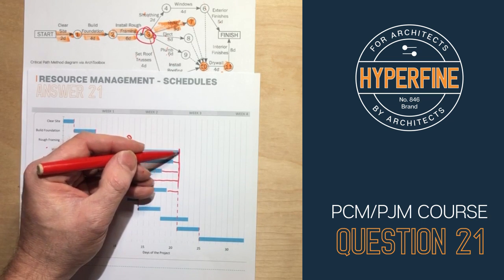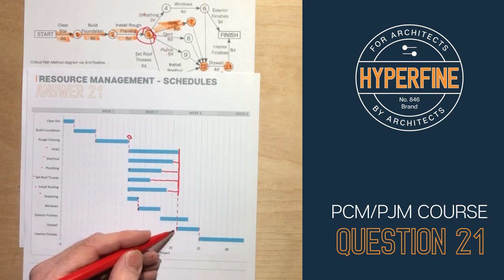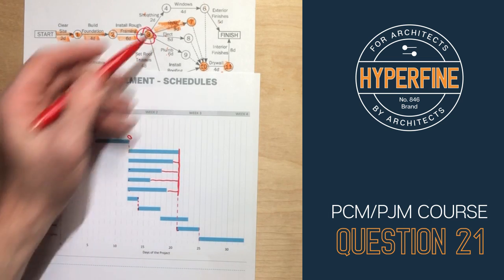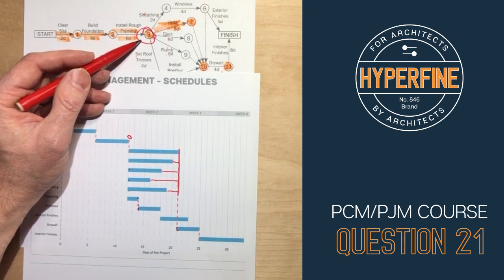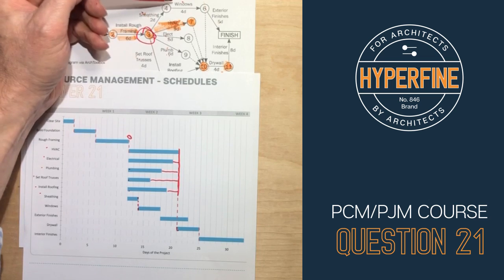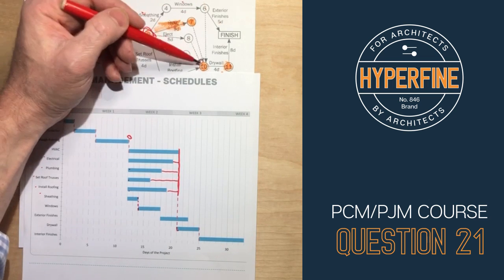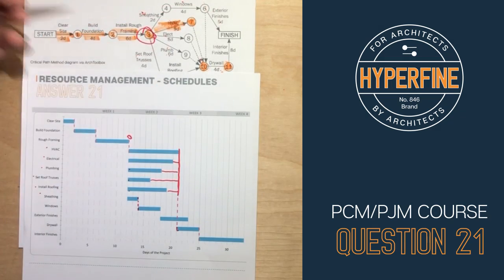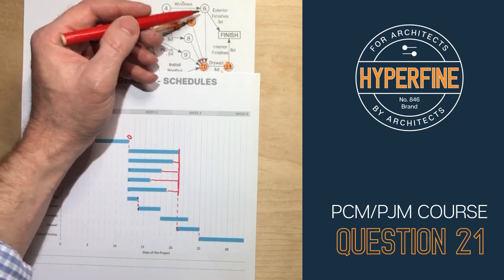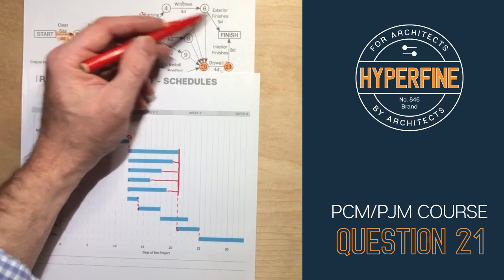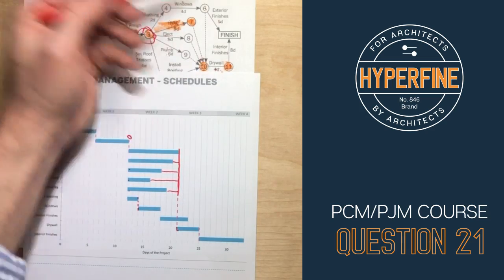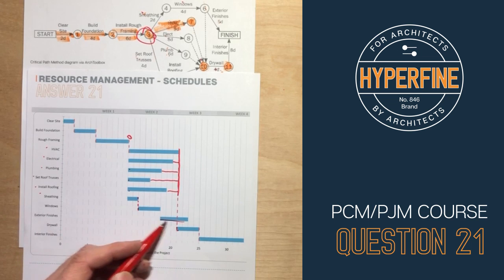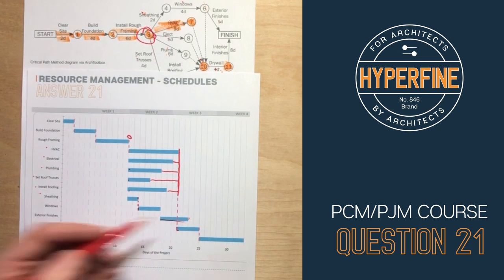Once you've reached milestone 10, you can install the drywall, and once drywall is done you can start the interior finishes. Meanwhile, back at milestone three after rough framing, you can do sheathing and windows, reaching milestone six, and start the exterior finishes — you don't need to wait for plumbing to begin exterior finishes. That path is only nine days total, so it still has float and is not the critical path, but exterior finishes can start before and finish after milestone 10.